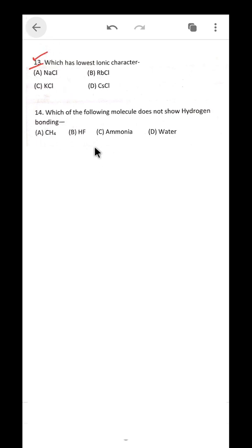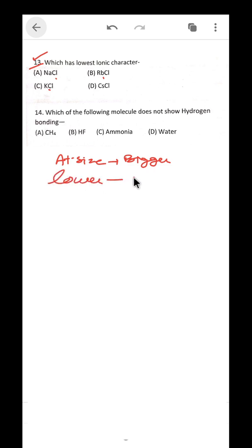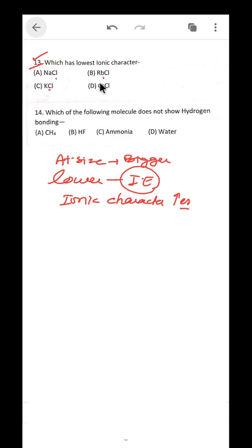Question 13: which has the highest ionic character? Here the Cl⁻ anion is the same in all options, so it depends on the cation size. Remember: the bigger the atomic size of the cation, the lower its ionization enthalpy, and the greater the ionic character. Ionic character increases with decrease in ionization enthalpy. Cesium has the largest size, so CsCl should have the highest ionic character. But the question asks for lowest, so the answer is NaCl.